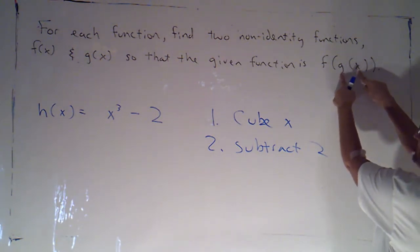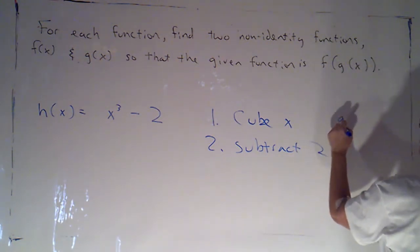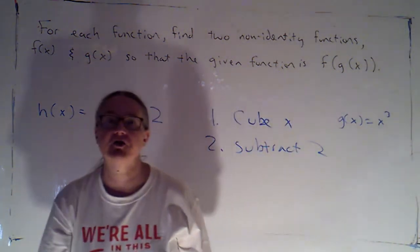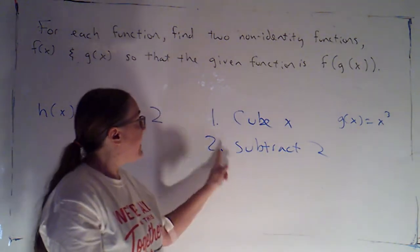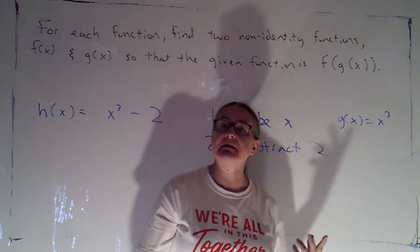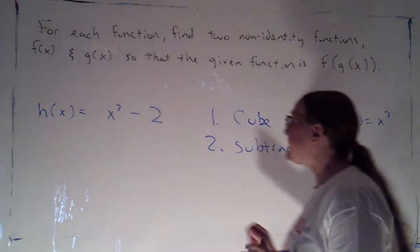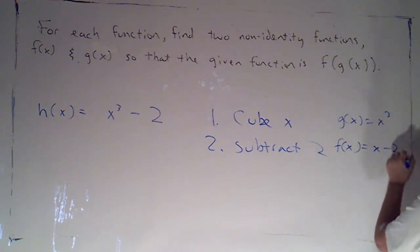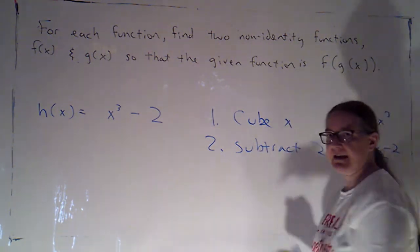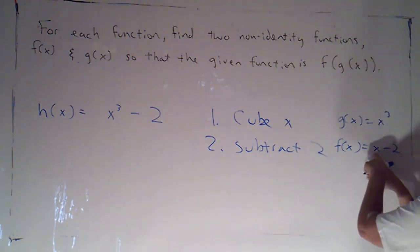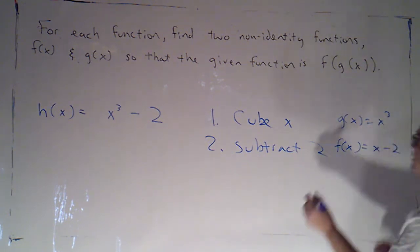So, I want g to be the function that tells me to cube things. So, g of x is just the cubing function. Then, I want to subtract 2. So, I want f to be the function that tells me to subtract 2. But the important thing here is that I need to remember to just use x as a placeholder for my input. All I'm doing in my second step is subtracting 2 from whatever I have.